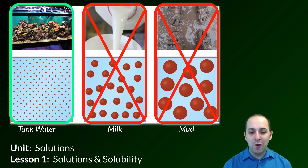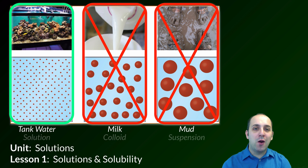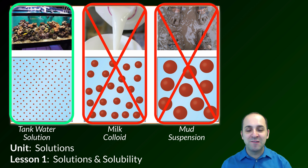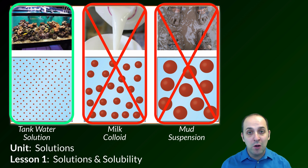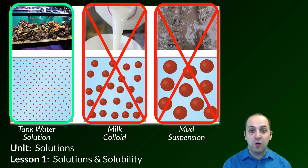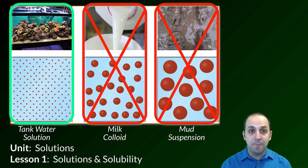It turns out that it's tank water. Milk and mud are two other kinds of substances that probably seem like they're indistinguishable from solutions to you right now. But as we go in and talk about solutions, you'll probably start to understand why they are in fact different. So let's begin.